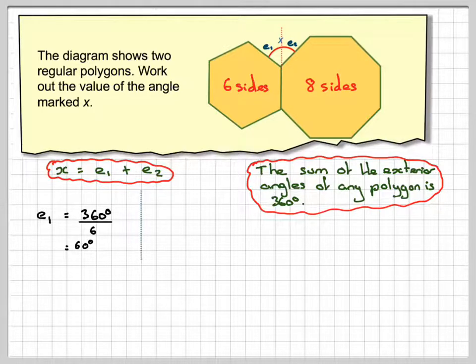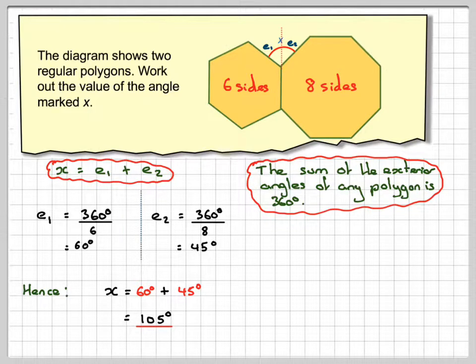And this one is eight sides, and therefore E2 will be 360 divided by eight, which gives me 45 degrees. Therefore, X will be 60 plus 45, which is equal to 105 degrees.